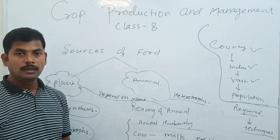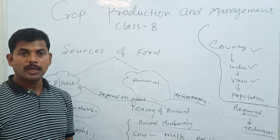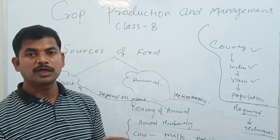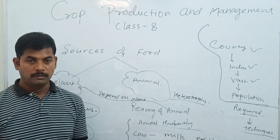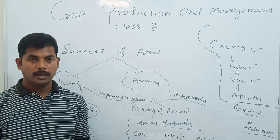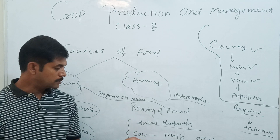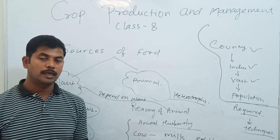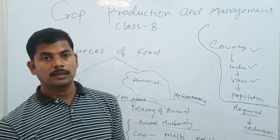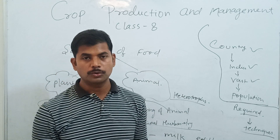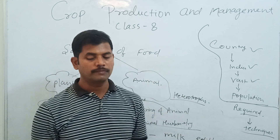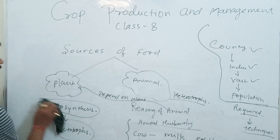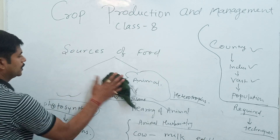Today you have seen piggeries where we take care of pigs, poultry farms where we take care of hens, and dairy farms where we take care of cows — washing them, giving food and medicine — whatever is needed. That is animal husbandry. So I hope the sources of food are clear to students.